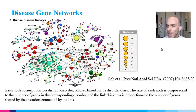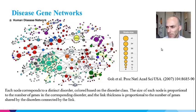Nodes in biological networks can be connected through more abstract types of interactions. For example, genes can be connected based on the disease that mutations in those genes can cause. In this particular example, each node corresponds to a distinct disorder colored by disorder class, the size of each node is proportional to the number of genes with mutations causing that disorder, and edge thickness is proportional to the number of genes shared by two disorders.